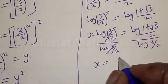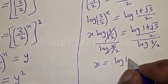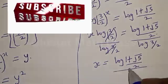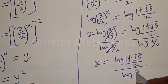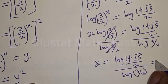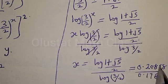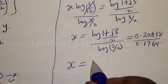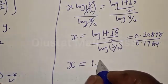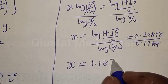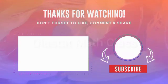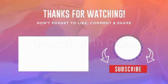S equals log of the golden ratio over log(3/2), which equals 0.20898 divided by 0.17609, and our final answer is S equal to 1.187. If you enjoyed the class, please don't forget to like, share, comment, and subscribe. Thank you.